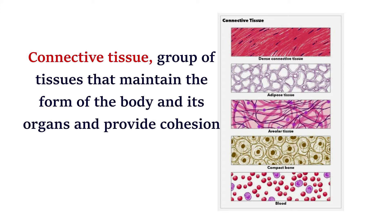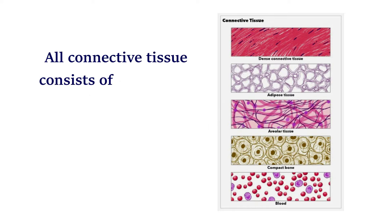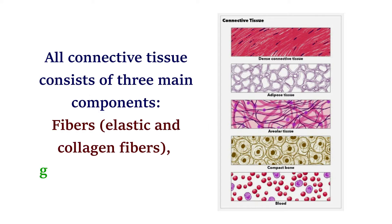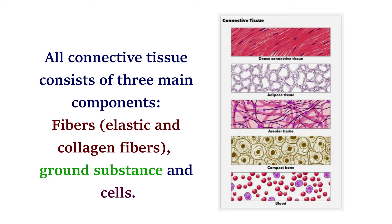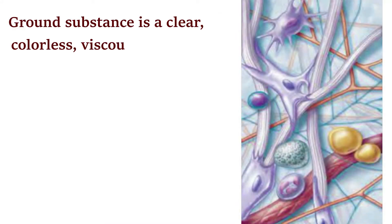Connective tissue is a group of tissues that maintain the form of the body and its organs and provide cohesion and internal support. All connective tissue consists of three main components: fibers (elastic and collagen fibers), ground substance, and cells.